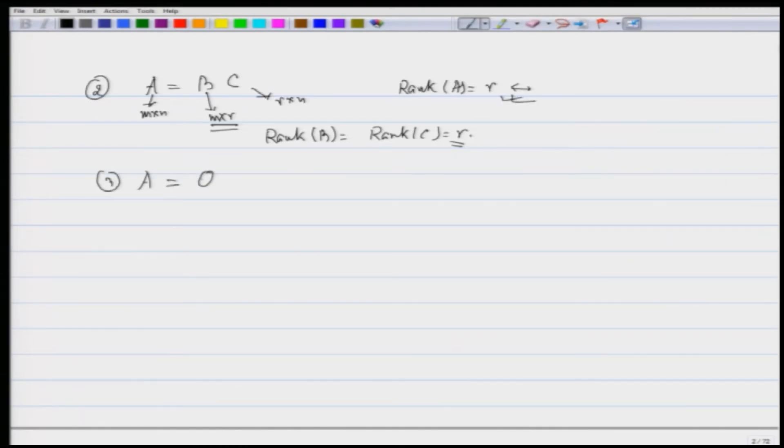Third is writing A as Q times R is important. Again M is this M cross N, Q will be something like M cross R and R is less than equal to M. This is R cross N again, but the important thing here is that Q has the property that Q transpose Q which is an R cross R matrix is identity. In some sense Q behaves as a orthogonal matrix. This is the third task that we are going to have.